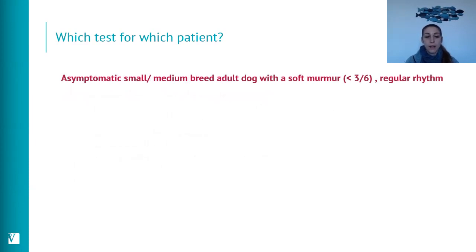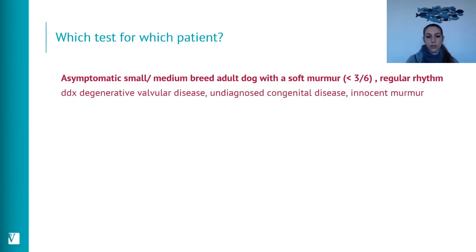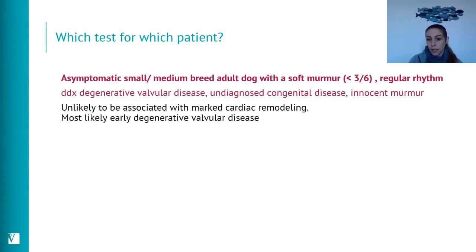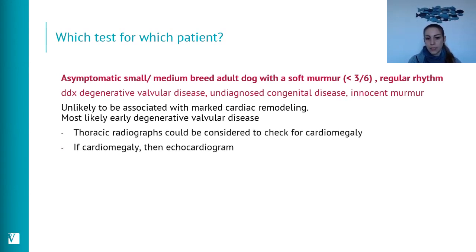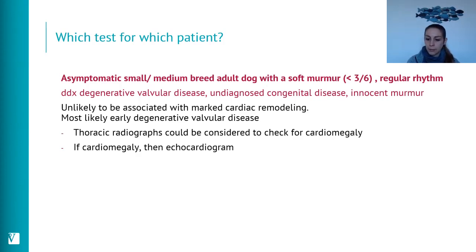Scenario 2: an asymptomatic small-to-medium breed adult dog with a soft murmur and regular rhythm. Differentials include degenerative valvular disease, undiagnosed congenital heart disease, or an innocent murmur. Marked cardiac remodeling is unlikely with a soft murmur. Thoracic radiographs can identify cardiomegaly and help guide whether an echocardiogram is warranted. Offering echocardiography directly is also not wrong; if funds are limited, starting with radiographs is reasonable.